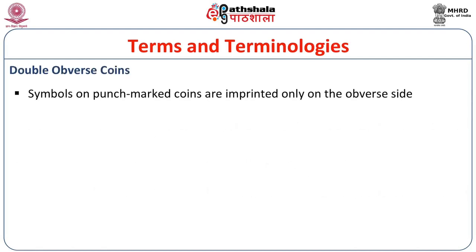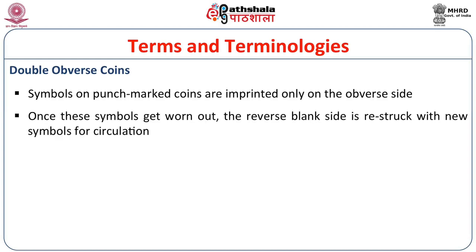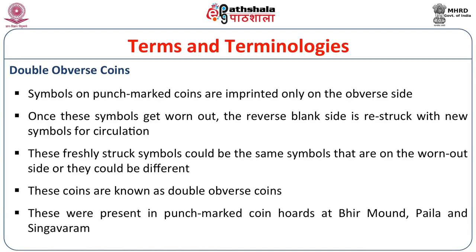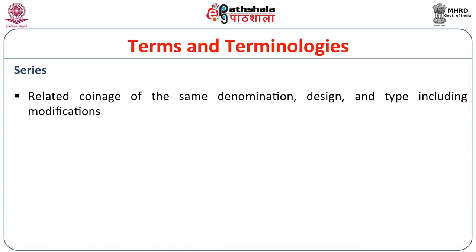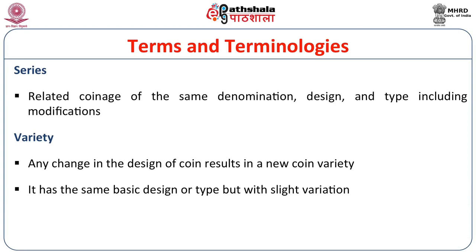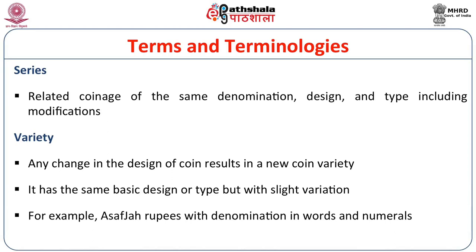Double obverse coins: on punch-marked coins, symbols are imprinted only on the obverse; once these symbols wear out, the blank reverse side is restruck with new symbols for circulation. These freshly struck symbols could be the same or different. These are known as double obverse coins. A series refers to related coinage of the same denomination, design, and type including modifications. Variety means any change in the design resulting in a new coin variety — same basic design but with slight variations; for example, Asaf Jahi rupees with denomination in words and numerals.